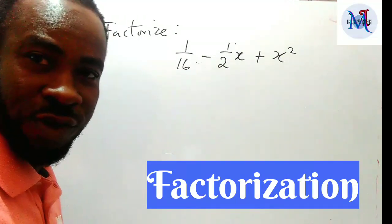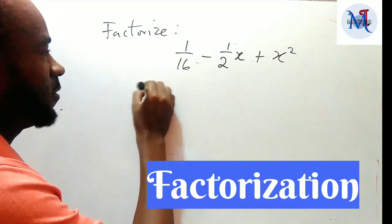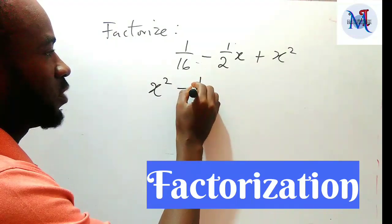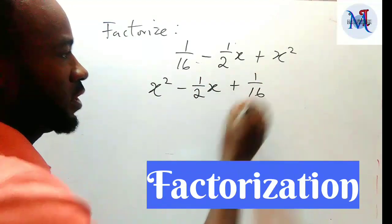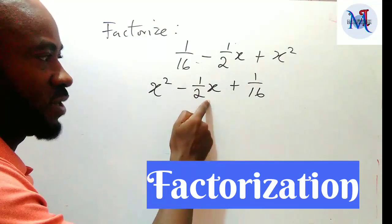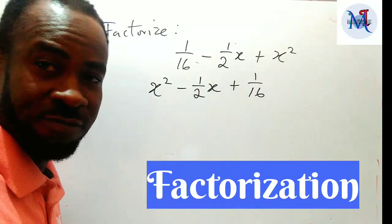Now the first thing you've got to do is to rearrange this. Let's put it in the general form of a quadratic expression. We have arranged it so that the term in x² will be first, then the x term, and then the constant term will be last. This is the best way to start.